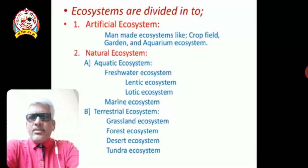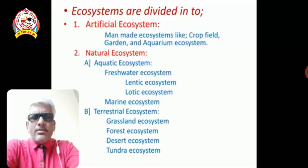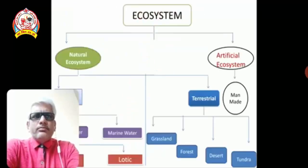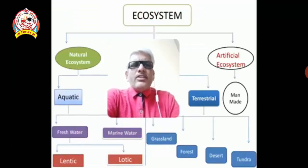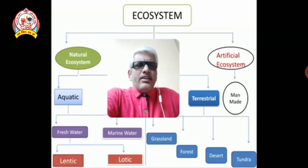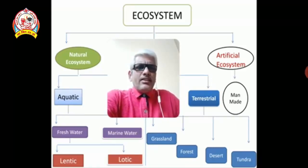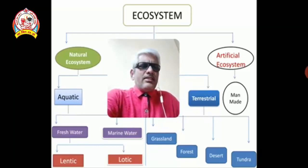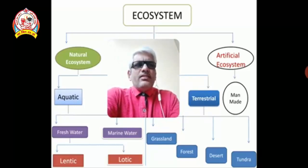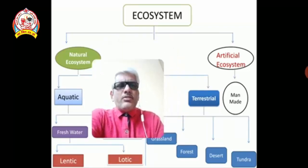Terrestrial ecosystems are away from the source of water and are also called land ecosystems. They are divided into four types: grassland ecosystem, forest ecosystem, desert ecosystem, and tundra ecosystem. A flowchart gives a clear idea of this division: natural ecosystems split into aquatic and terrestrial; aquatic splits into freshwater and marine; freshwater splits into lentic and lotic; and terrestrial splits into grassland, forest, desert, and tundra.